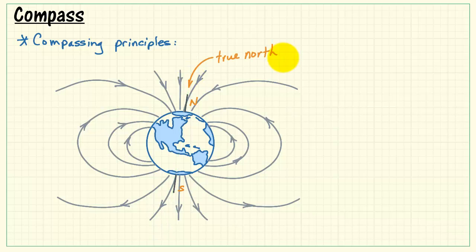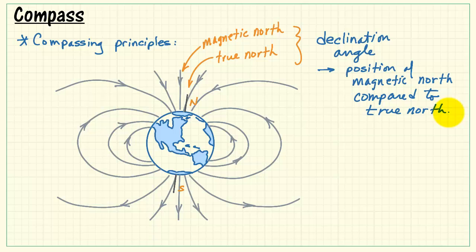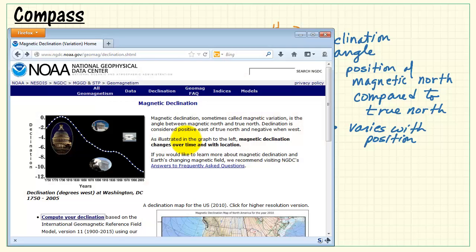Here we have the true north. That's based on the axis of rotation of the Earth. Magnetic north is a little bit different and the difference between those two is called the declination angle. This is the position of magnetic north compared to true north and it does vary with your position or location on the Earth.